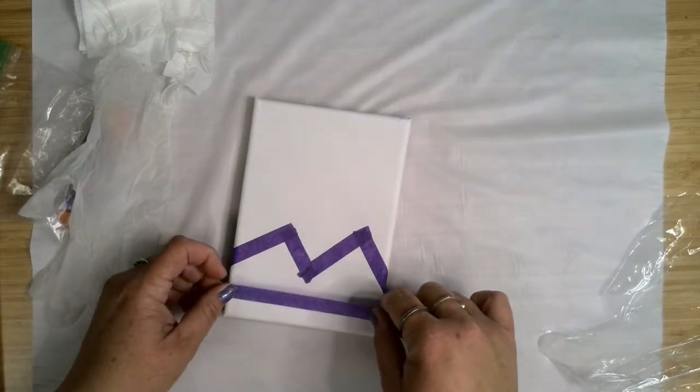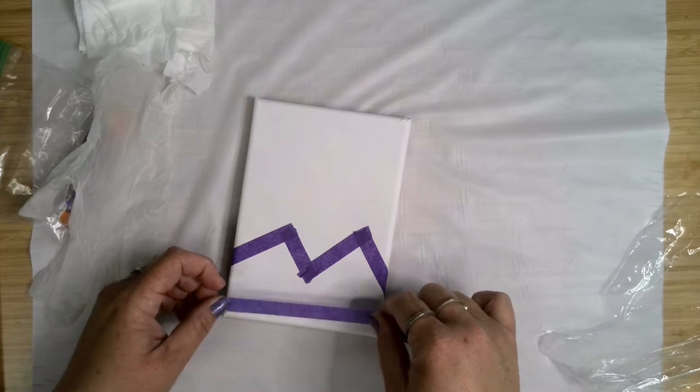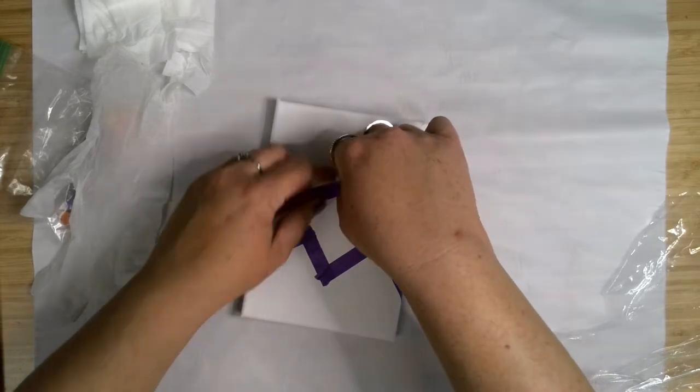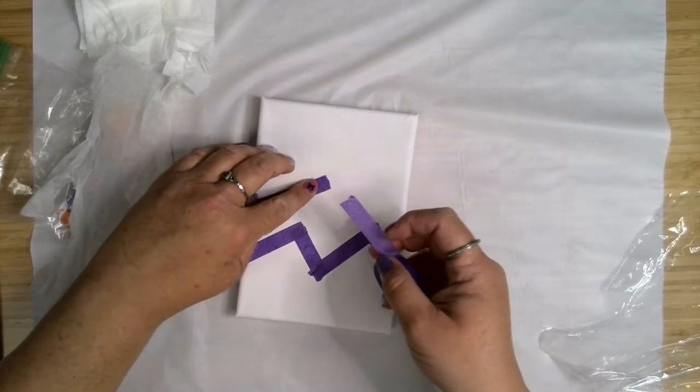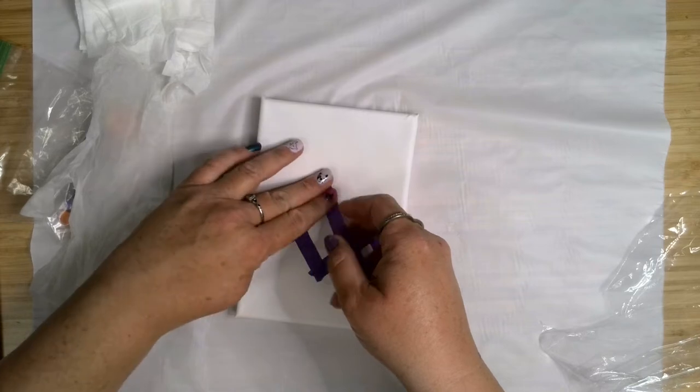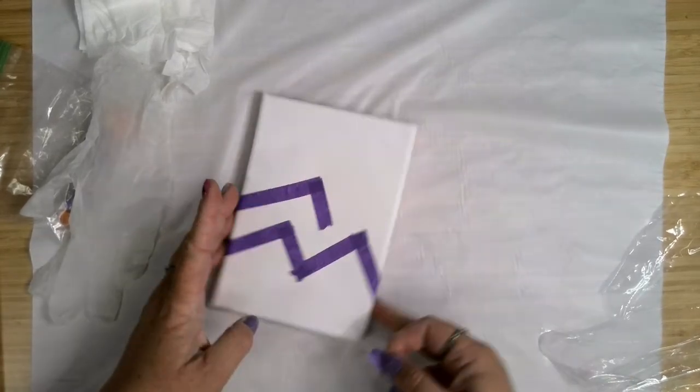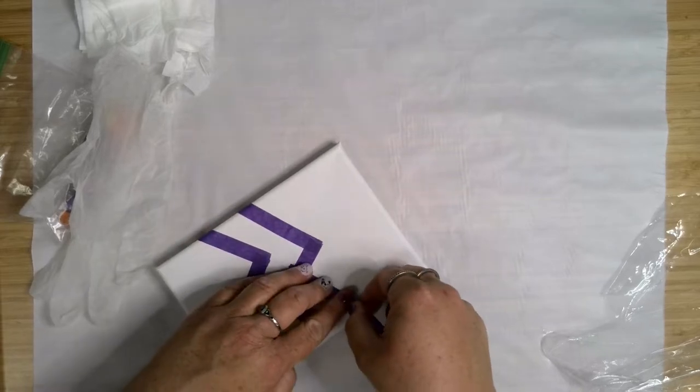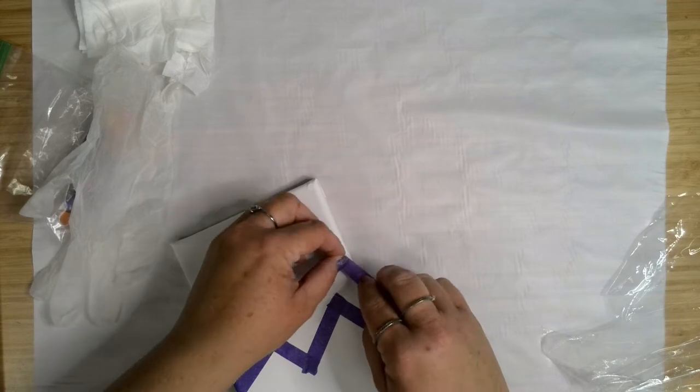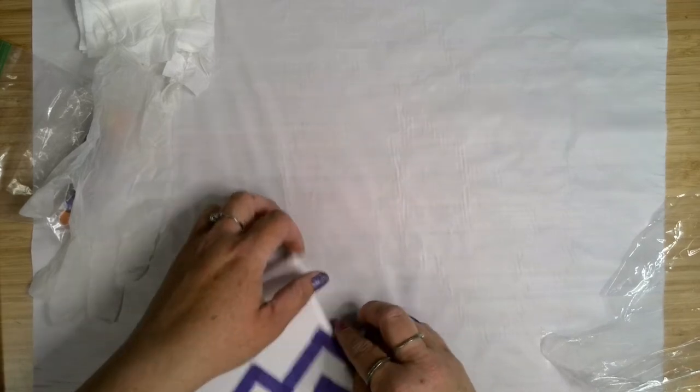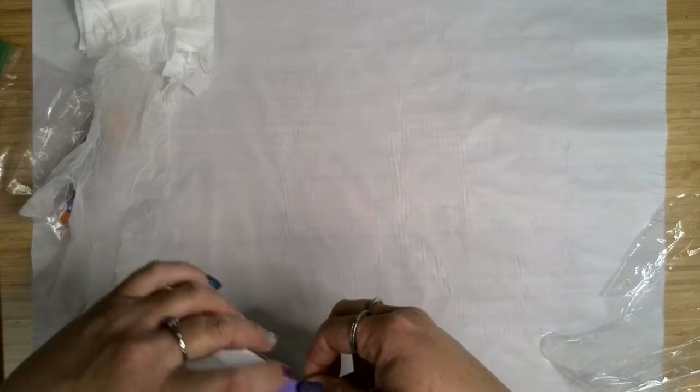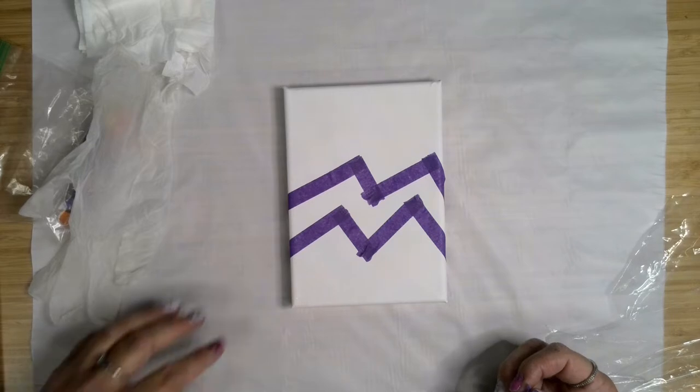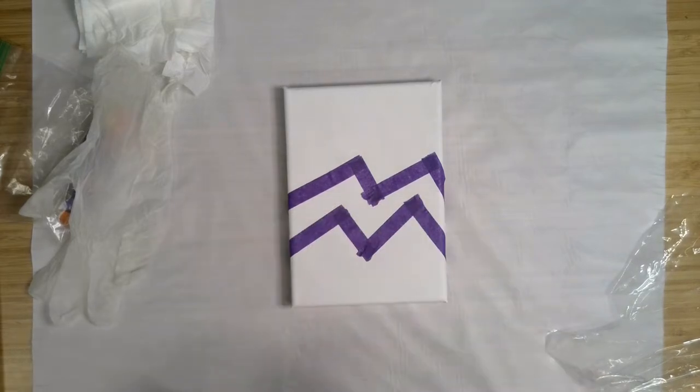I am going to do another kind of mirroring that here. A short piece there. And remember that any places where you have your tape, at least at first, is going to be masked off and will remain the color of the canvas.